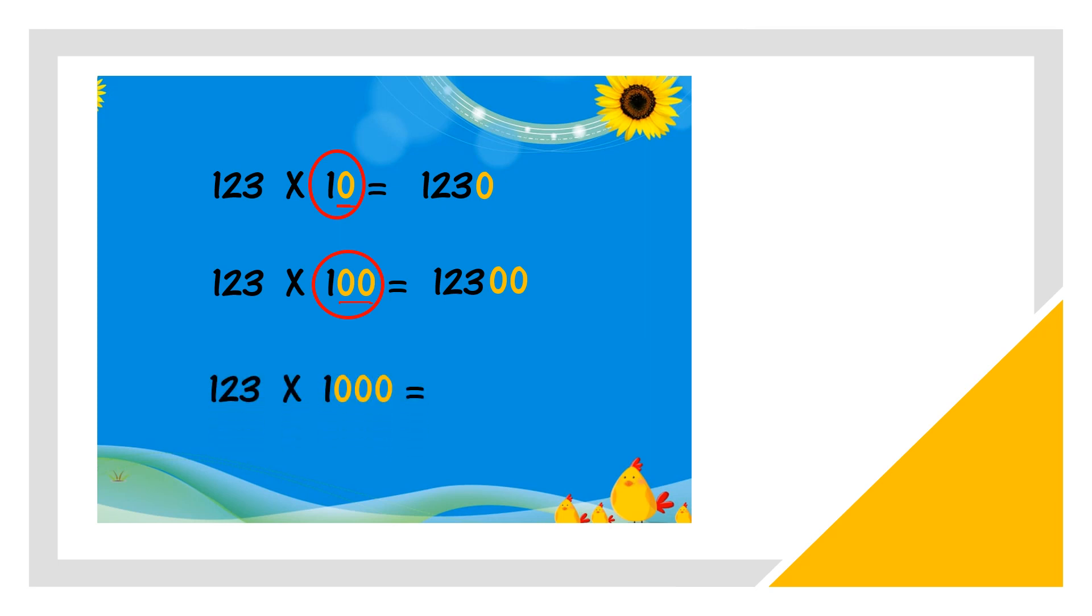Next one, 123 times 1,000. So circle 1,000. Bulatkan 1,000. Copy back the number 1, 2, 3. Salin semula nombor di depan: 1, 2, 3. And then, 1,000 has 3 zeros. So we add 3 zeros at the back. Very easy, right? As easy as A, B, C.